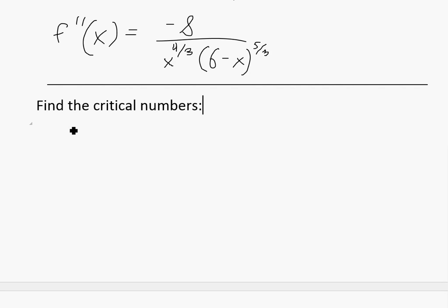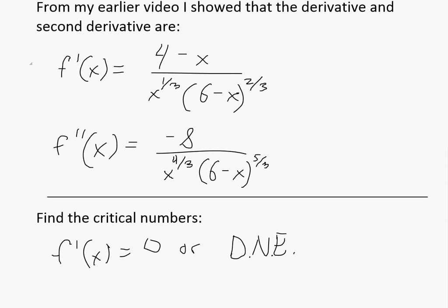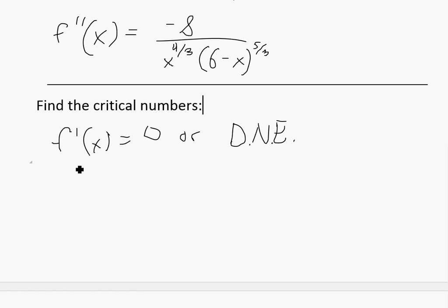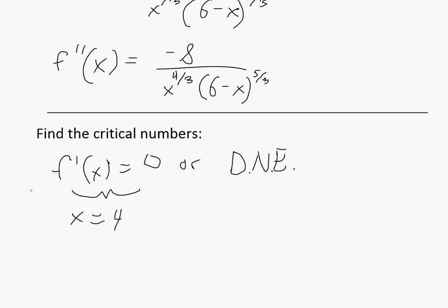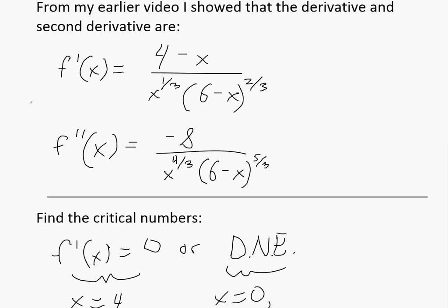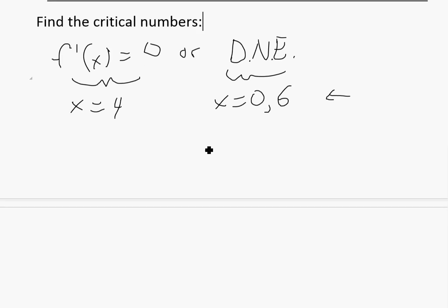Critical numbers are where the first derivative is either 0 or does not exist (DNE). Looking at the first derivative — (4 minus x) divided by x^(1/3) times (6 minus x)^(2/3) — this equals 0 when the numerator is 0, i.e., 4 minus x = 0, so x = 4. It does not exist when the denominator is 0: x = 0 makes the first factor zero, and x = 6 makes the second factor zero. So our critical numbers are x = 0, x = 4, and x = 6.